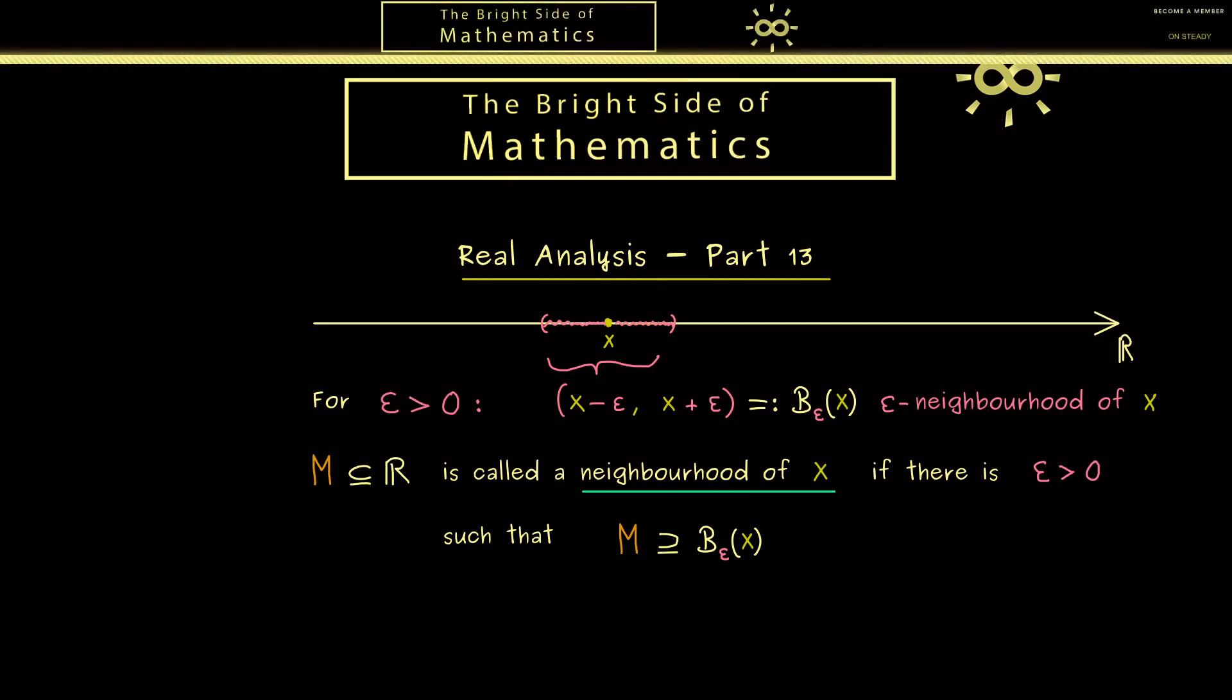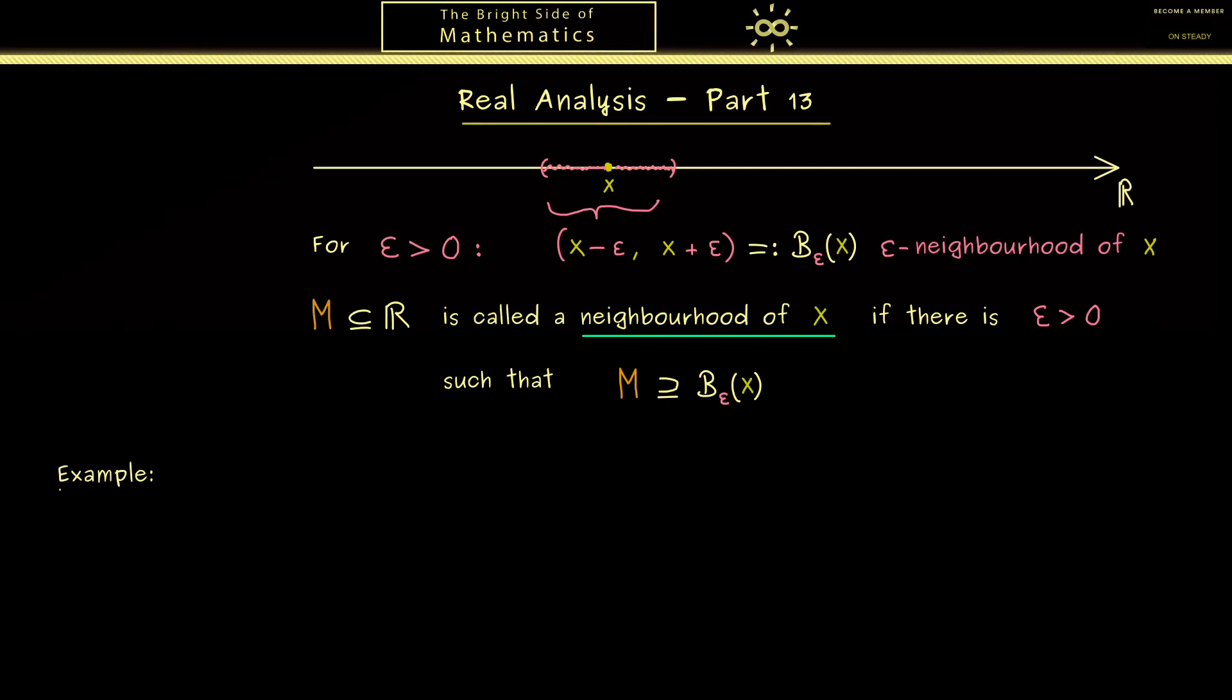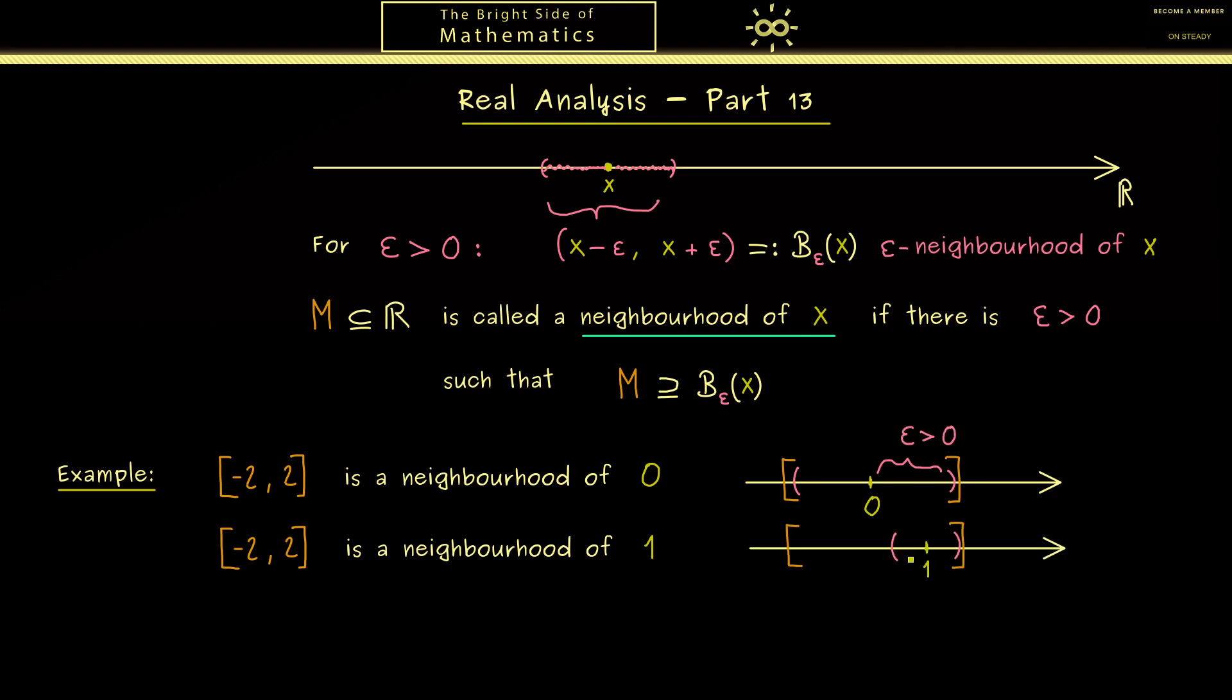Maybe we should start with a simple example. If you have the number line in mind we immediately get a lot of subsets. For example the interval that starts with the number minus 2 and goes to the number 2. This set is a neighborhood of the point x equals 0. However also it's a neighborhood of the point x equals 1. The only important thing here is that we find an epsilon, it does not matter how large it is, it only needs to be positive. So maybe here in the second case we have to choose a smaller epsilon than before, however still the only thing we need is that we find such an epsilon.